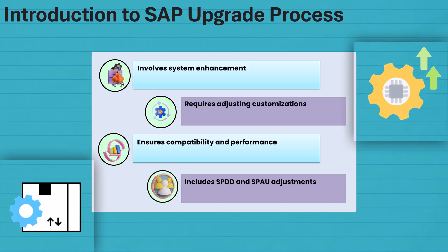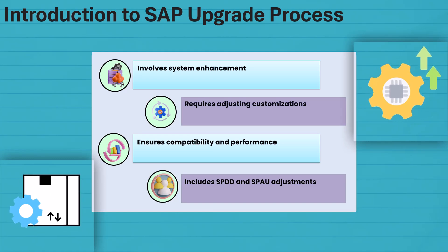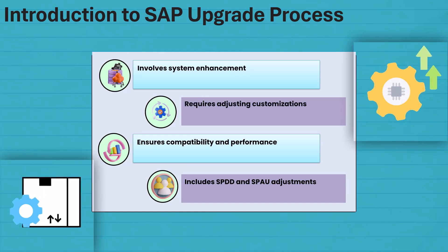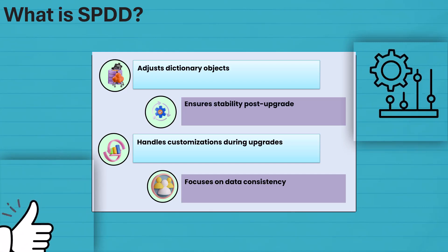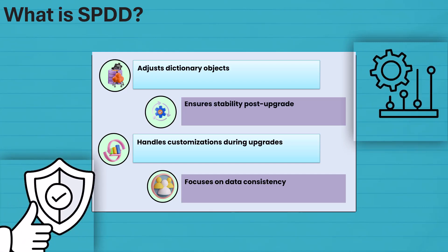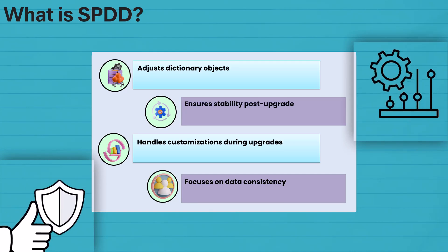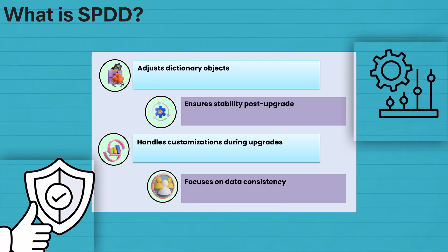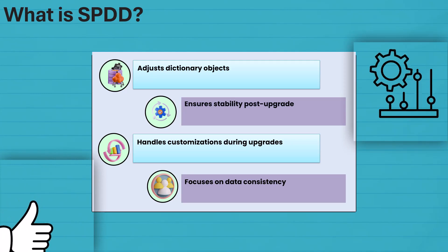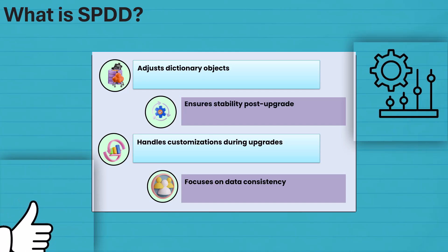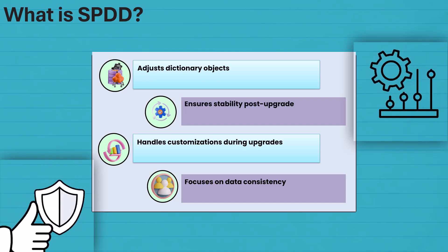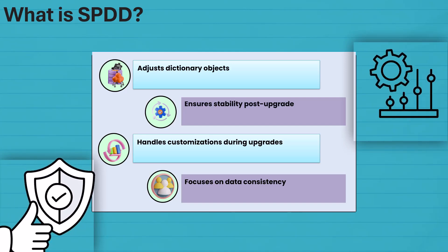Let's discuss how SPDD and SPOW fit into this process, making it less daunting and more effective. SPDD might sound like tech jargon, but it's your dictionary whisperer during upgrades. It adjusts objects so they fit seamlessly into the upgraded system. Picture it as the mediator, ensuring your customizations and upgrades shake hands without any drama. Let's explore its role in ensuring harmony.